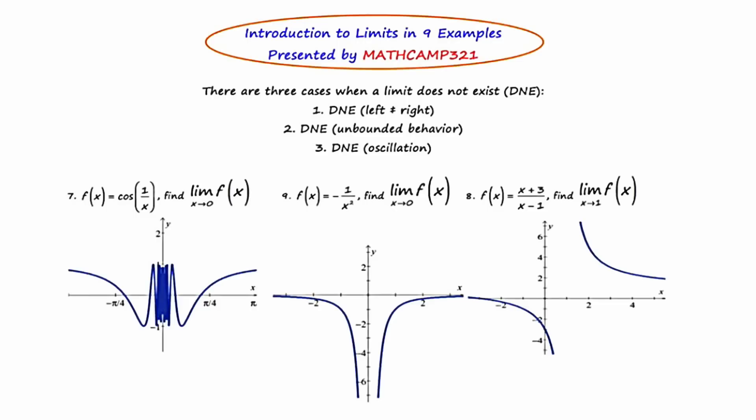In the last three examples, we're going to talk about three cases when a limit does not exist. The three reasons when a limit might not exist are: DNE does not exist because the left and the right side are approaching different values. Another reason is DNE does not exist because of unbounded behavior. The y-values either keep climbing larger and larger without any limitation, or they get smaller and smaller without any limitation. And the third reason is DNE oscillation, which means as you approach from the left or the right, the y-values just oscillate and flip-flop back and forth between two or more values.